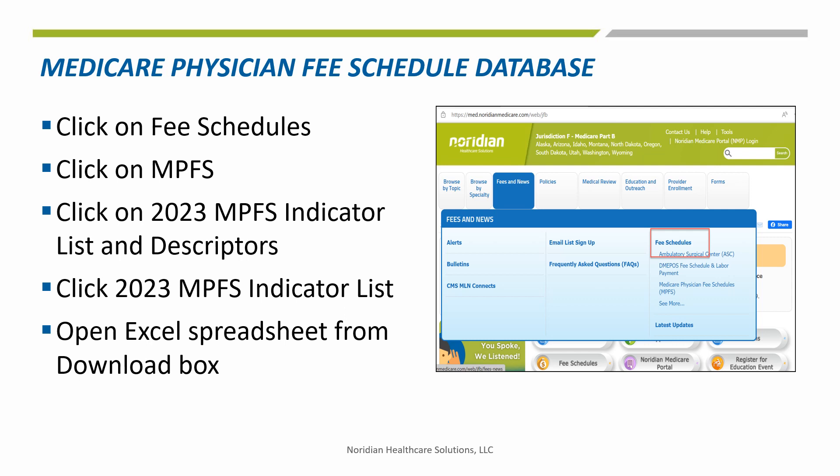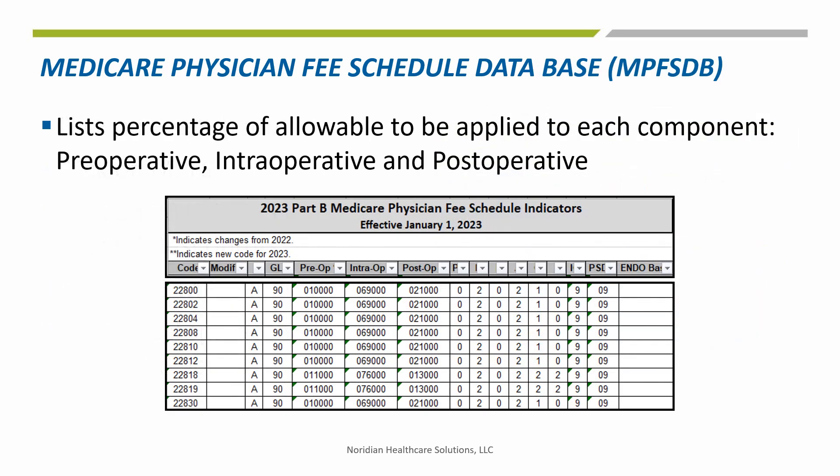Now we're going to look at the Medicare physician fee schedule database. On the left-hand side of the slide, you'll see the directions of how to get to the database spreadsheet. Now to determine the split in care, you will want to look at the column marked postop percent. For code 22812 — arthrodesis posterior for spinal deformity with or without cast, eight or more vertebral segments — the postop percentage listed is 21%.